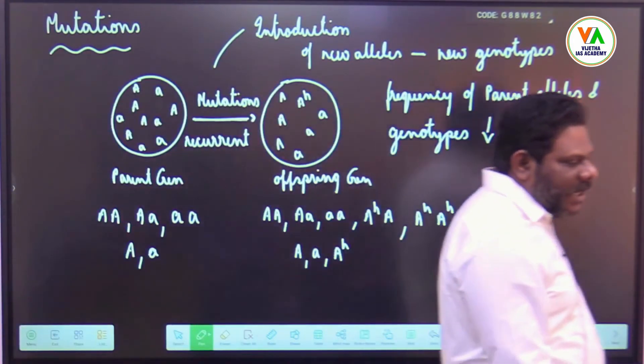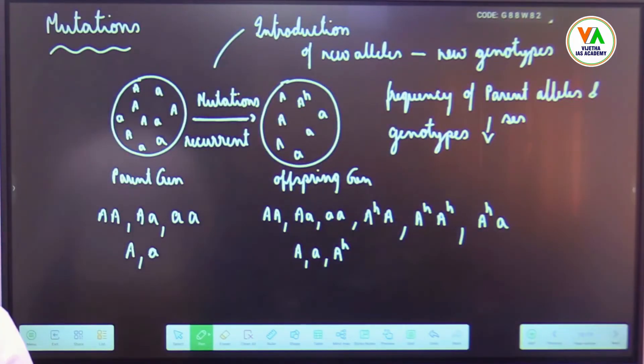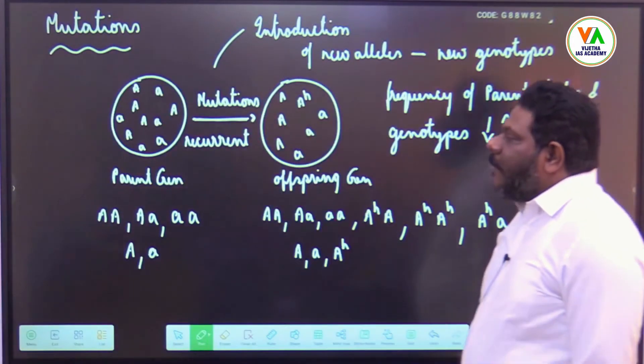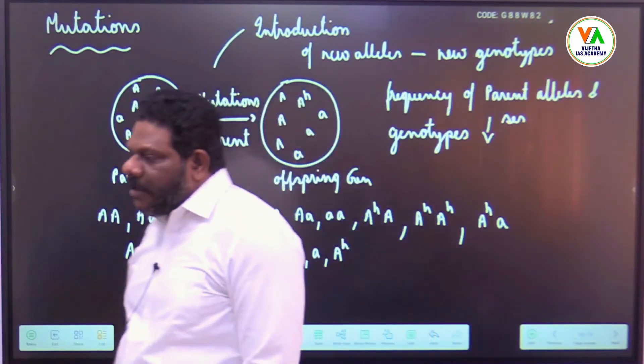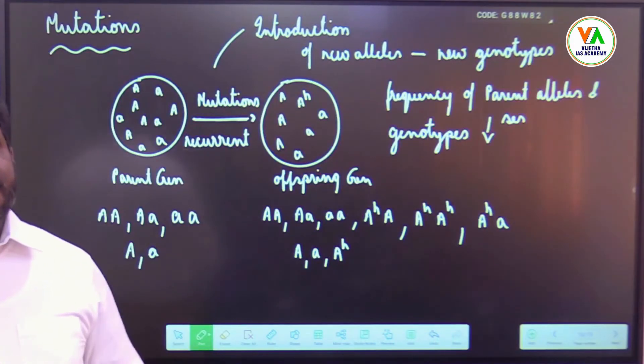Mutations are sudden and drastic changes in the genetic material of an organism. Organisms which have undergone mutations are known as mutants. Agents which cause mutations are mutagens. Mutations can be non-recurring mutations or recurring mutations.